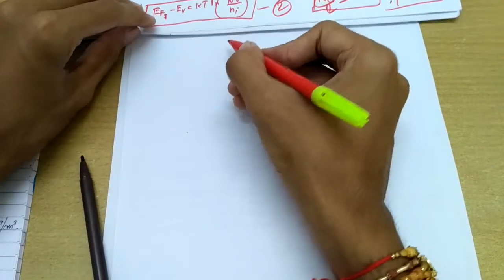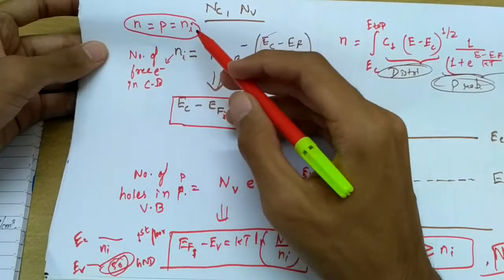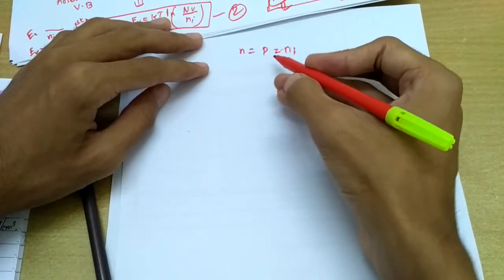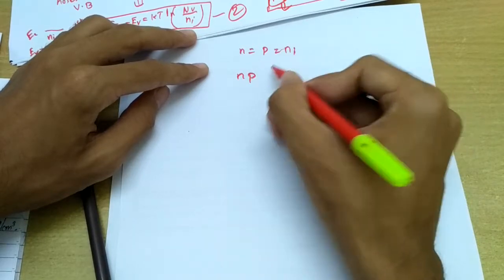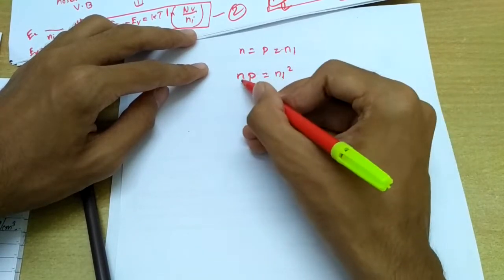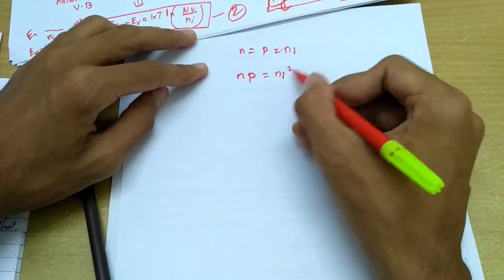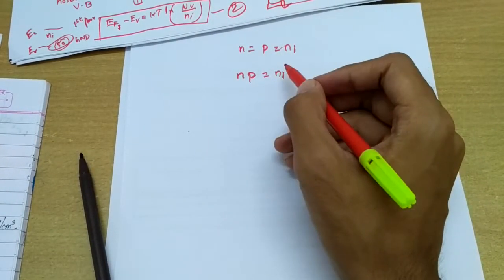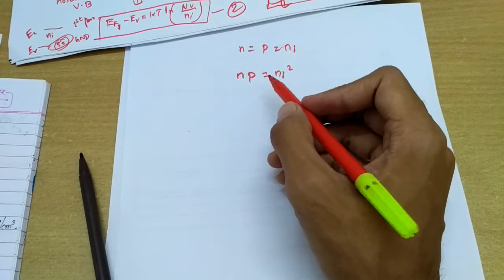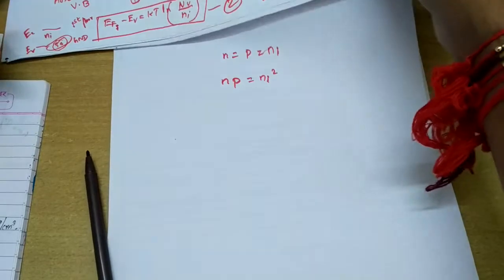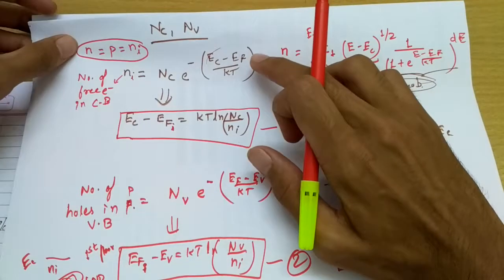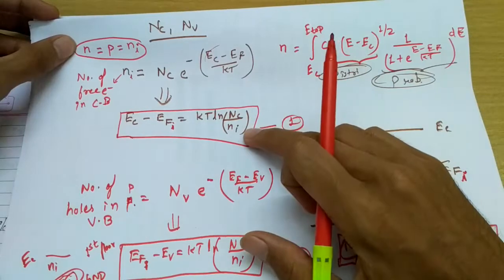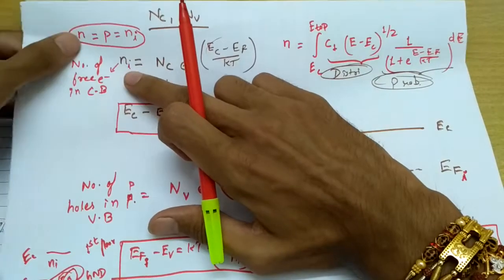We know that n equals p equals ni for an intrinsic semiconductor. From the mass action law, for any semiconductor the product of electron and hole concentrations equals the square of the intrinsic carrier concentration, np = ni². Using this relation we will derive a very important result by substituting the values of n and p.